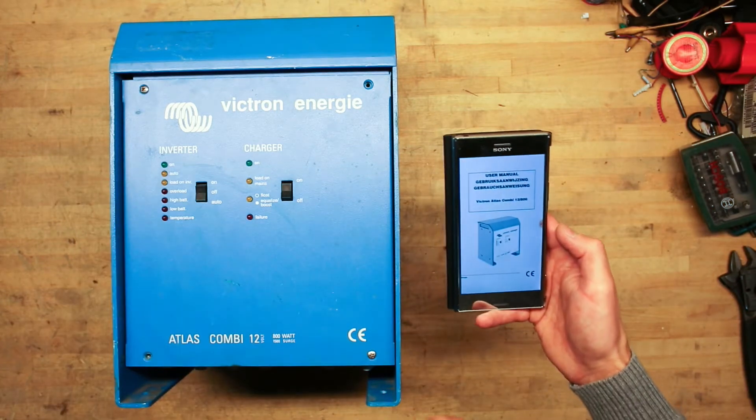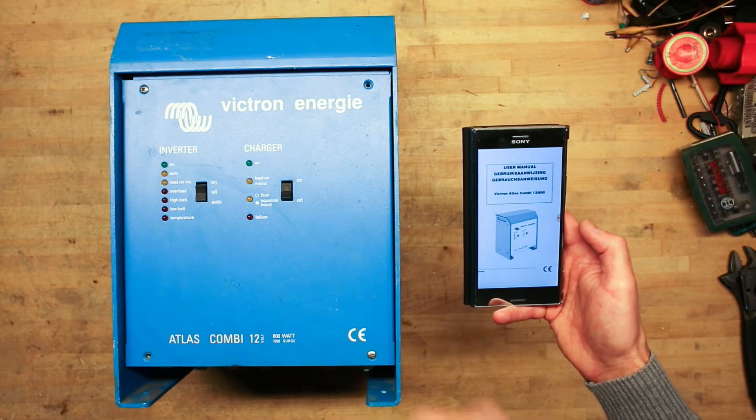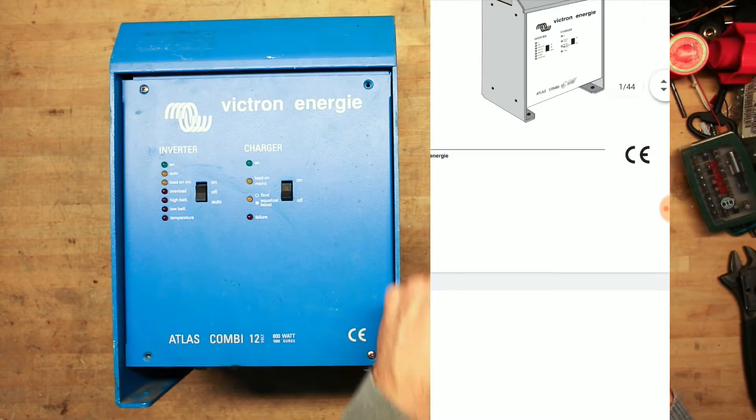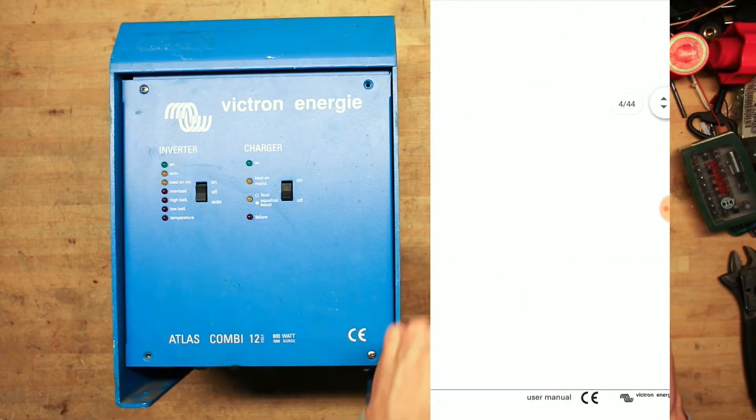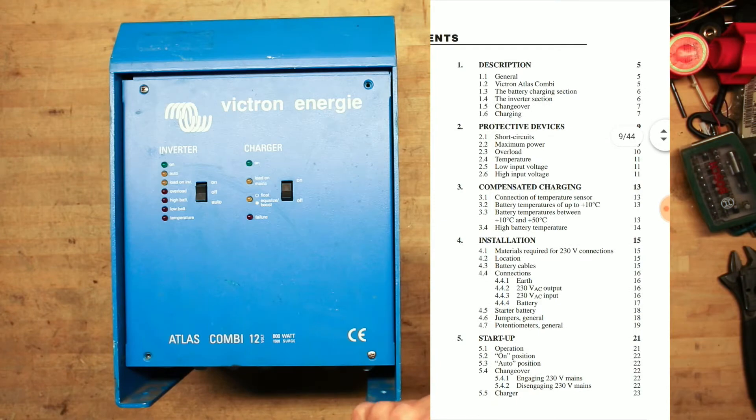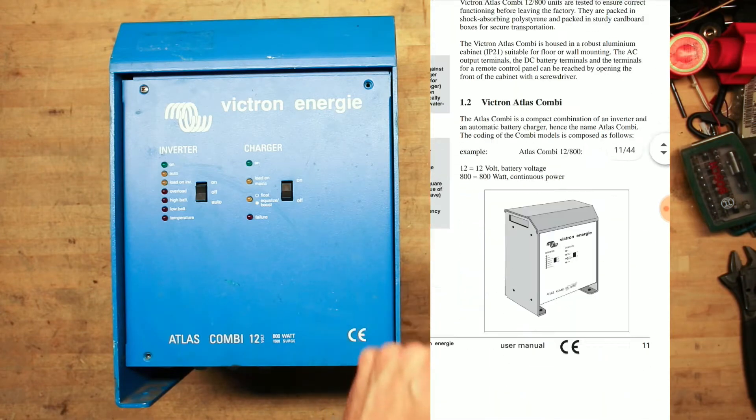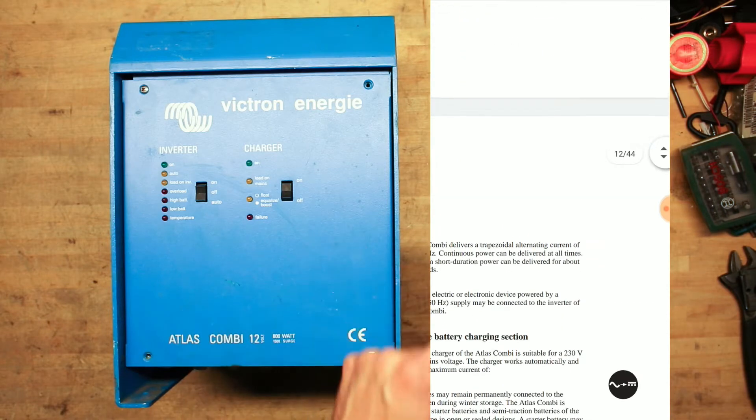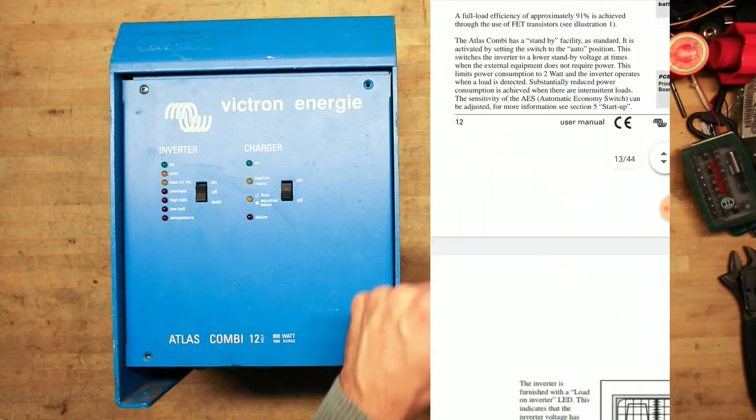So let's just quickly flip through the manual here. We can see the picture of the unit, seems to fit this quite well. Just want to know something about the specifications and how to connect the 230 volt AC. It says here the example codes of the Combi. If it's 12 slash 800, it's this model and it's the only model named here in the manual.